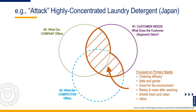Consider the case of ATAK, a laundry detergent introduced by the Kale Group in Japan in the 1980s. At the time, the customer needs for laundry detergent were well established: cleaning efficacy, safe and gentle, good for the environment, ready to wear after drying, easy to use, and smells fresh and clean. To design new detergents, most manufacturers focused on some combination of these attributes. Also, some detergents were sold in large high-value boxes to enhance perceived value.